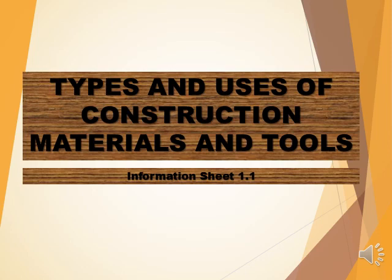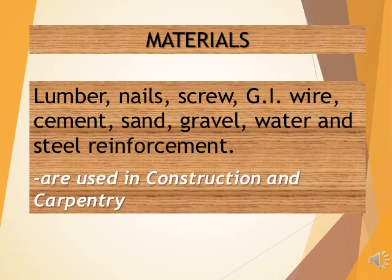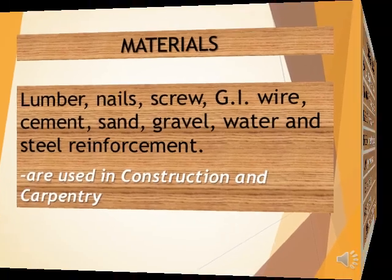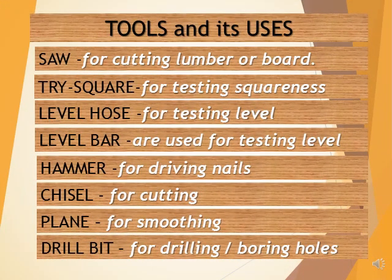Our topic is Types and Uses of Construction Materials and Tools. The materials used for construction and carpentry are: lumber, nails, screw, GI wire, cement, sand, gravel, water, and steel reinforcement. Carpentry tools and their uses: saw for cutting lumber or board, tri-square for testing squareness, level hose for testing level, level bar for testing level, hammer for driving nails, chisel for cutting, plane for smoothing, and drill bit for drilling or boring holes.